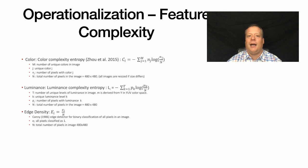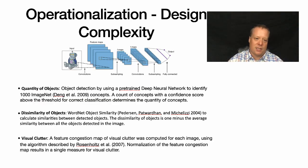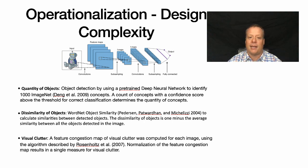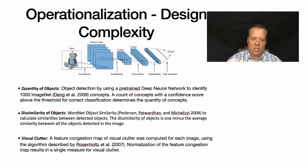These methods were developed in the computer science realm for analyzing images. We used a pre-trained neural net to quantify the number of objects using an ImageNet setup, and we used the WordNet object similarity measure to calculate similarities between detected objects. Finally, we used the Rosenholtz algorithm to determine the visual complexity of the image.